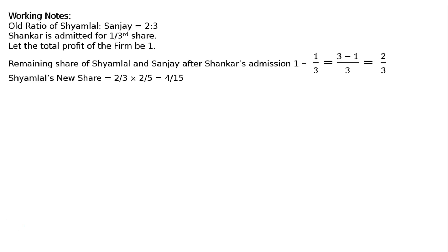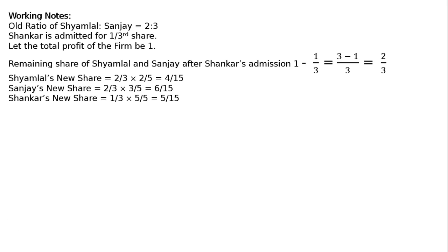Samlal's new share is 2/3 × 2/5 = 4/15, because the two-thirds share available to Samlal and Sanjay is shared in the old ratio of 2:3. Sanjay's new share is 2/3 × 3/5 = 6/15. Sankar's new share is 1/3 × 5/5 = 5/15.